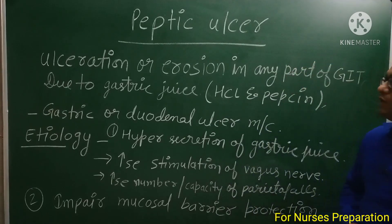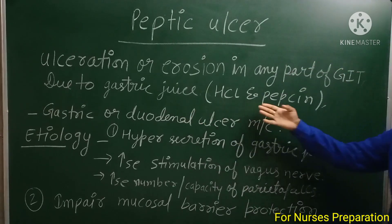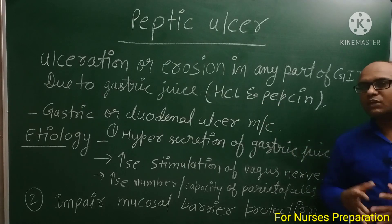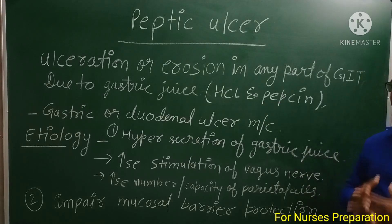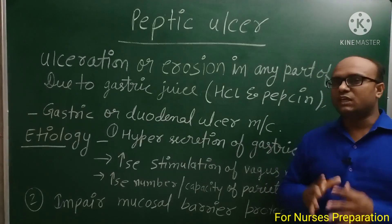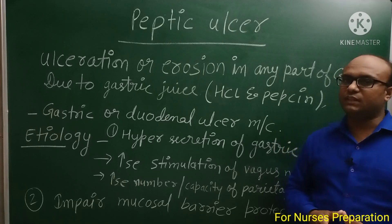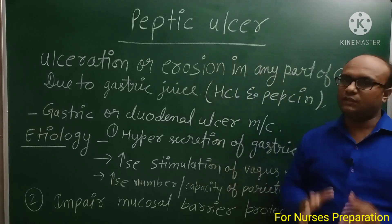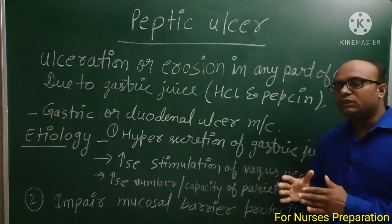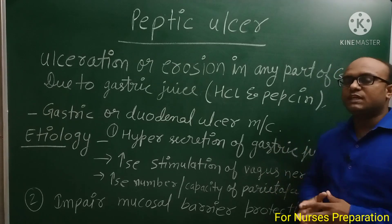हमारे stomach वाले part में जो gastric juices secret होते हैं — HCl और pepsin — बार-बार HCl और pepsin के contact में आने के कारण, वहाँ की inner layer damage हो जाती है, destroy हो जाती है, और वहाँ पर एक घाव बन जाता है — इसे हम Peptic Ulcer कहते हैं।